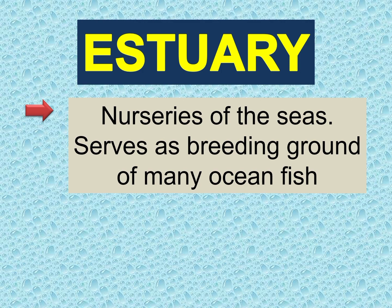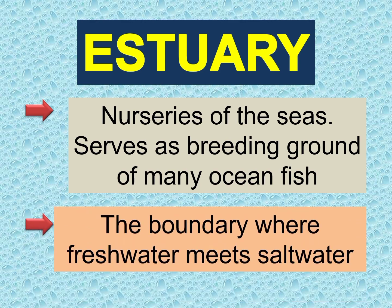Estuary is also called the nurseries of the seas. Why is it called a nursery? Because it serves as a breeding ground for many ocean fish. Most fish breed here in the estuary — they lay eggs and raise their young before going to the ocean. It is the boundary where fresh water meets salt water. The estuary is that meeting point — where fresh water and salt water come together.